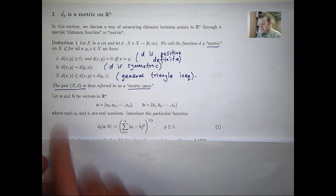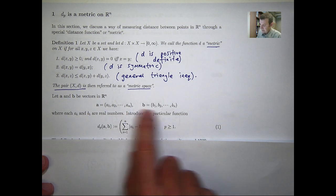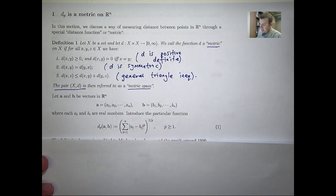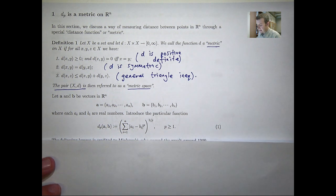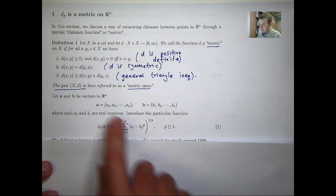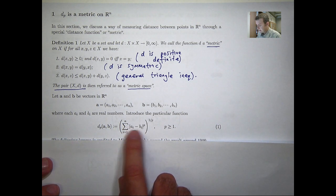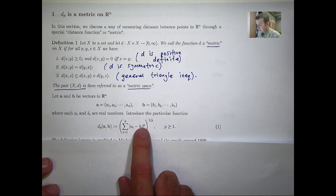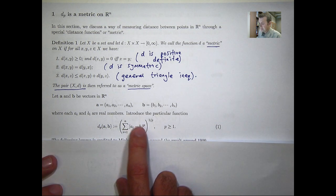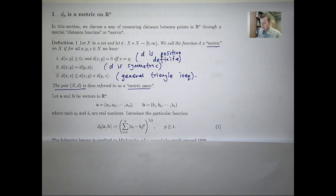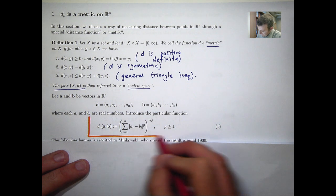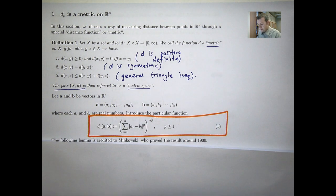Suppose these boldface characters represent vectors in R^n. I'm going to introduce the function d sub p, where p is some number greater than or equal to 1, defined as follows. Essentially, to calculate the distance between two vectors you look at the corresponding components, take the difference, take the absolute value, raise it to the power p, sum from i equals 1 to n, and then take the p-th root. This is quite abstract, so let's look at some special cases.